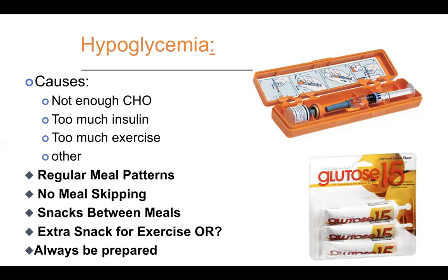There have been unfortunate cases of athletes who died in their sleep because they treated a high blood sugar caused by exercise, went to sleep, and their blood sugar continued to drop overnight. Recommendations: don't skip or delay meals, don't consume alcohol — especially without carbs. Have items available to treat hypoglycemia: half a cup of fruit juice, soda, honey, glucose tabs, or glucose gel that you rub on your lips.